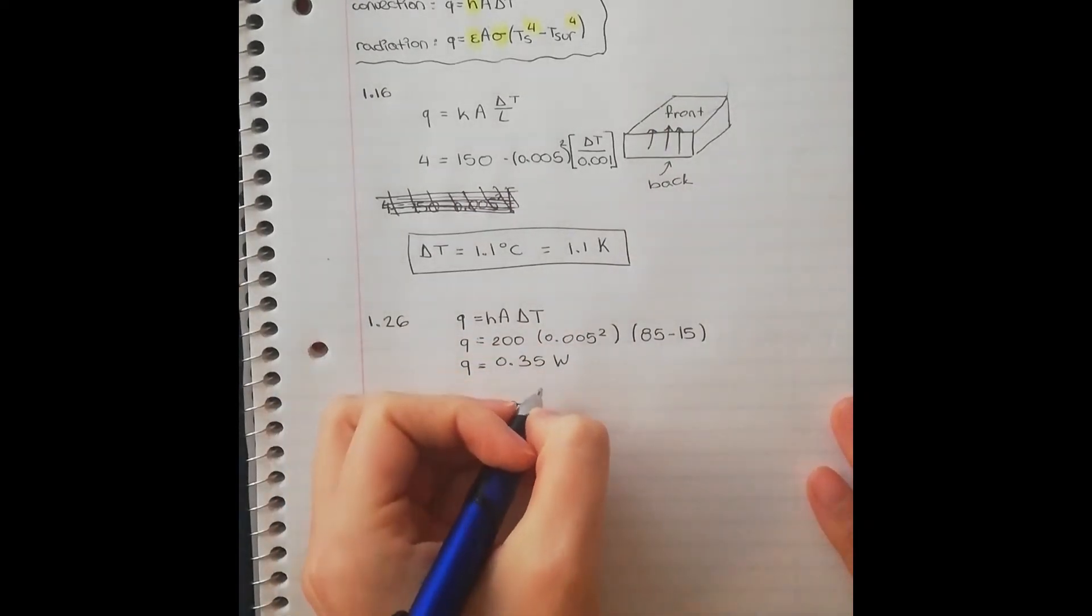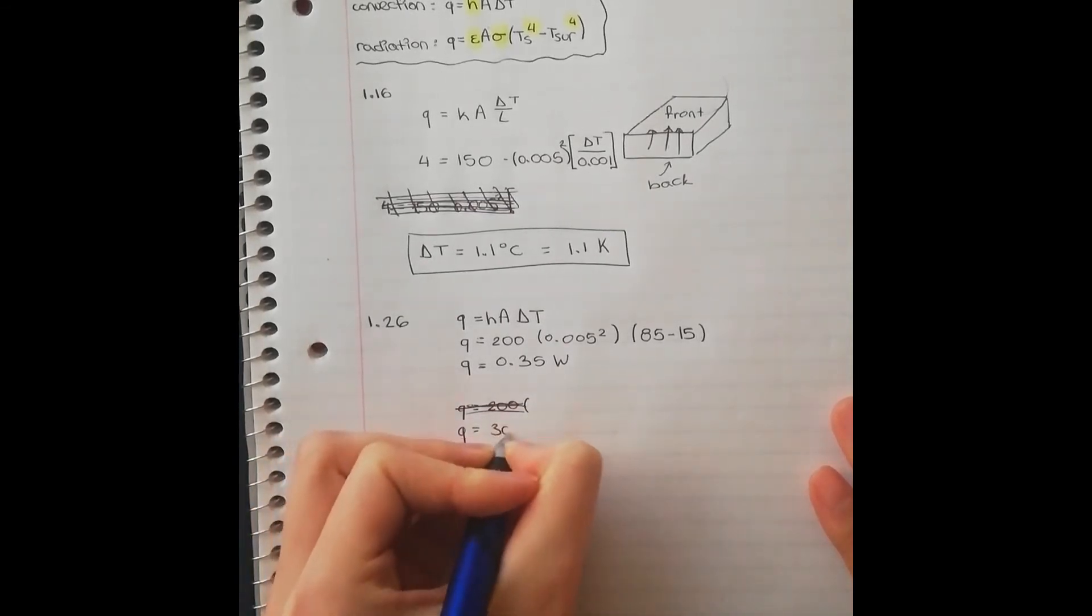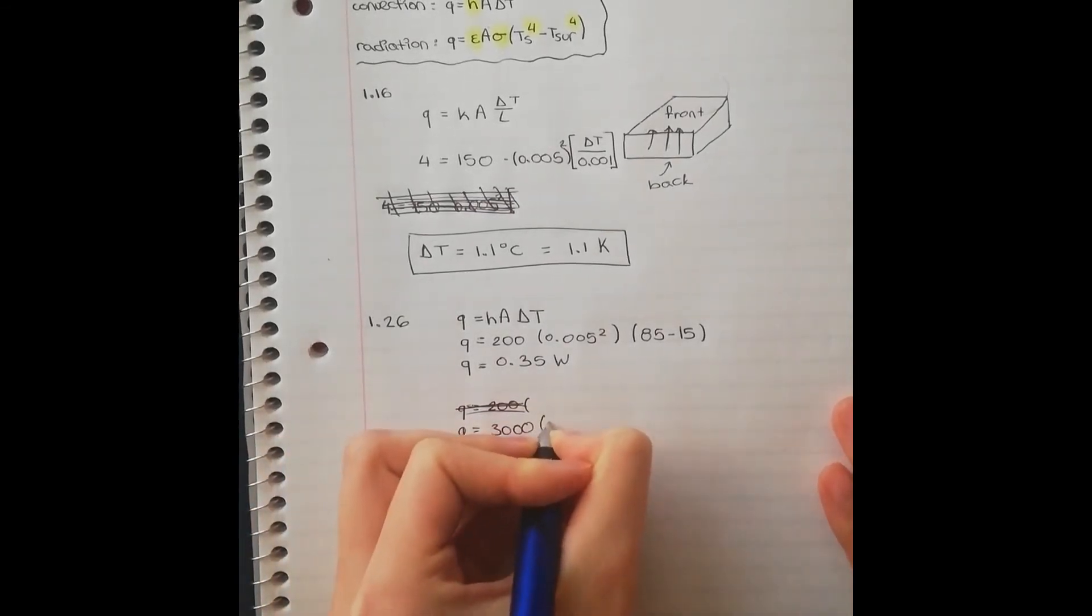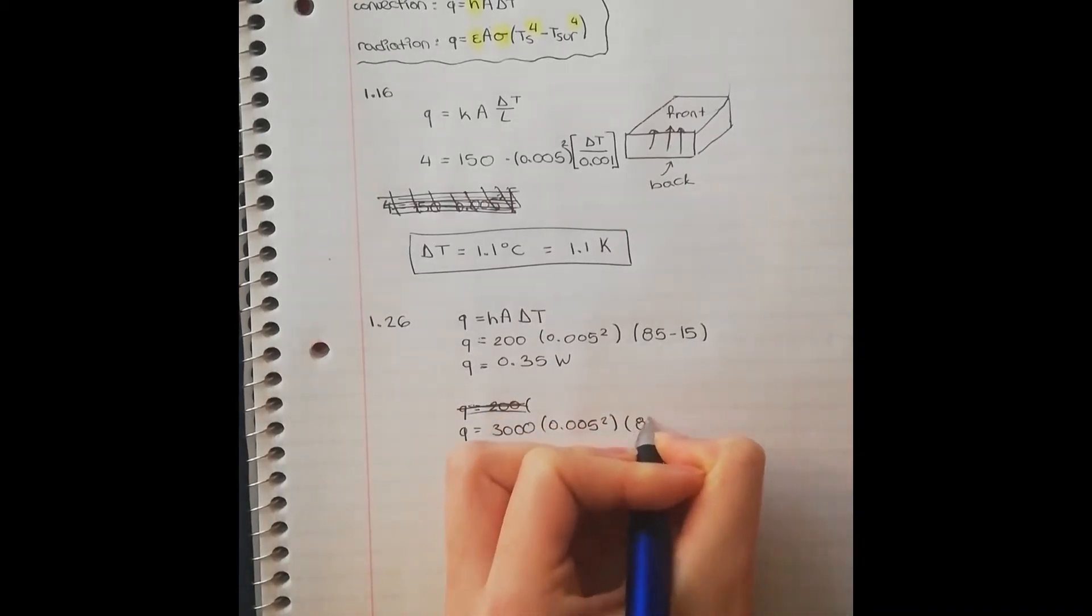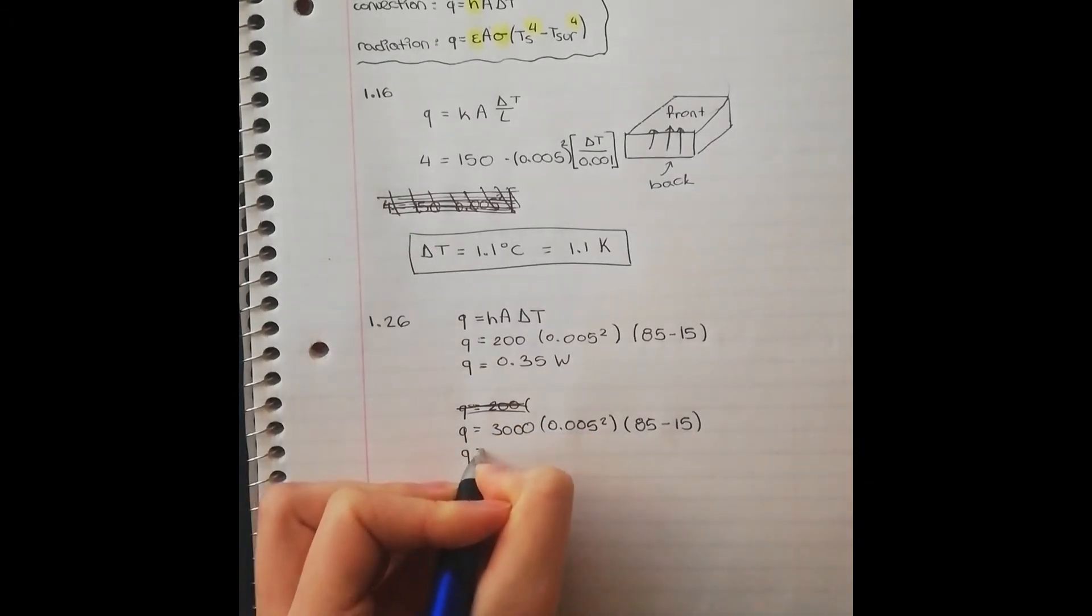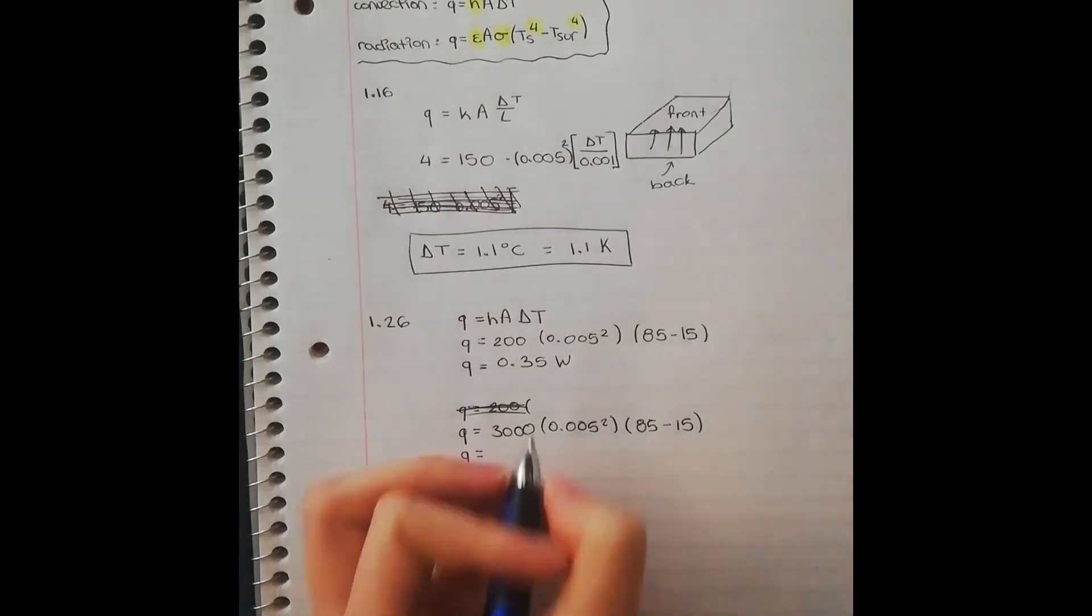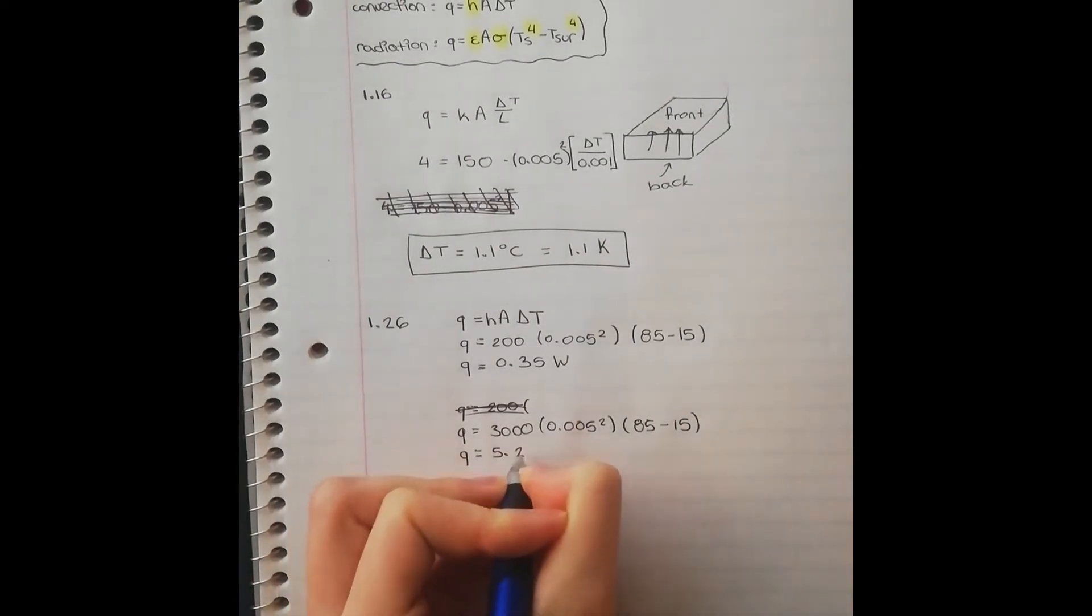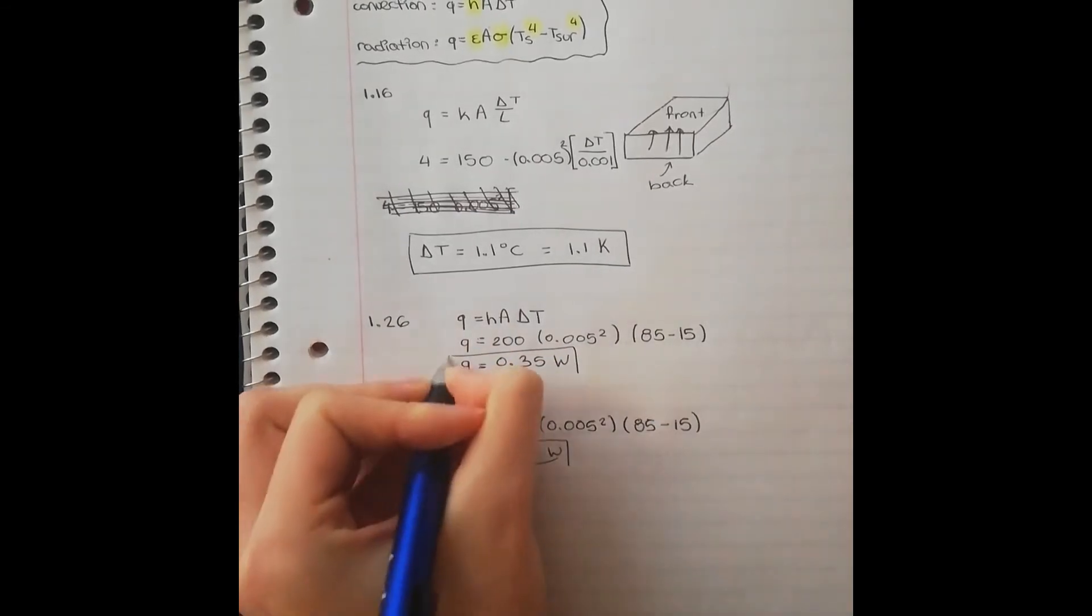Similarly, you can solve this equation for the other H that is given to us. So you will have 3,000 times the area times the same change in temperature, and that is going to be equal to 5.25 watts. And you have finished the problem.